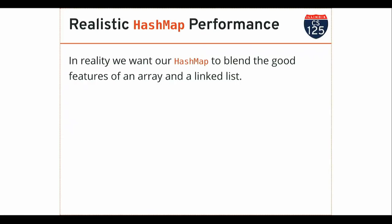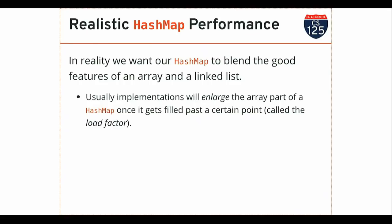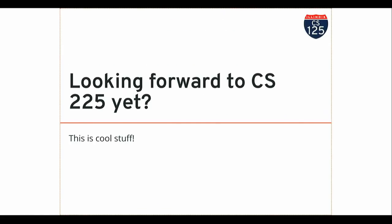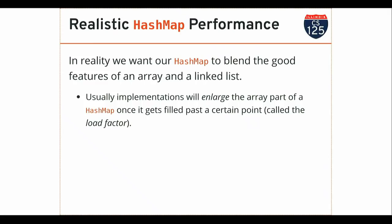In reality, what we typically do is size the array to blend things together — to give us a trade-off between not using too much memory and not having O(N) performance. If you use Java's HashMap implementation, which I'd encourage you to do, it does this internally: when you start adding things it uses a small array, but if the map gets really big it will rebalance — increase the size of the array and move stuff around. I love this data structure because there are so many cool trade-offs to think about.